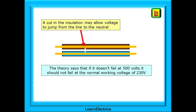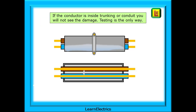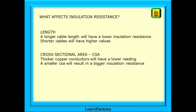Why are we testing? A cut in the plastic insulation may allow the voltage to jump from the line to the neutral, a danger to the customer and causing the protective devices to trip. The theory says that if the insulation does not fail at 500 volts it should not fail at the normal working voltage of 230 volts. How can we tell if the cable is damaged without testing if the cables are in conduit, trunking, or plastered into walls? We must test if we want to be certain that all is okay. The two main factors that can alter the results are the length of the conductor and the cross-sectional area or size of the conductor. A longer cable length will have a lower insulation resistance, and thicker copper conductors will also have a lower reading, while a smaller CSA will result in a bigger insulation resistance value.